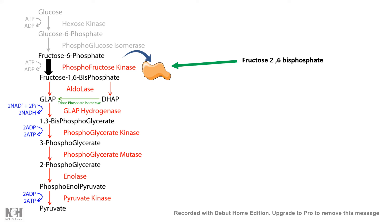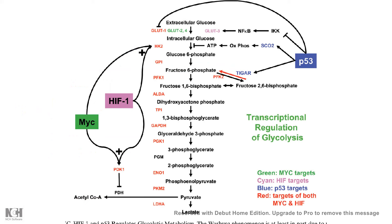Apart from allosteric modulation of enzymatic activity, there is also transcriptional control. For example, hypoxia-inducible factor or HIF1, which is a transcription factor activated under hypoxic conditions or lack of oxygen, controls 9 out of 10 glycolytic enzymes, thereby regulating the process of glycolysis. So not only is there enzymatic control, there is also transcriptional control on the glycolytic pathway.